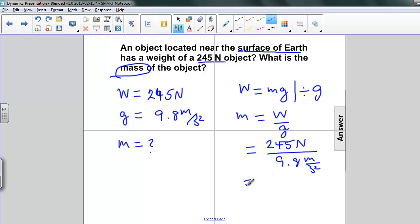When we go through the calculation, 245 divided by 9.8, we get 25. And newtons over meters per second squared is kilograms. So mass is 25 kilograms.